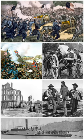In the South, many men deserted temporarily to take care of their distressed families, then returned to their units. In the North, bounty jumpers enlisted to get the generous bonus, deserted, then went back to a second recruiting station under a different name to sign up again for a second bonus; 141 were caught and executed. From a tiny frontier force in 1860, the Union and Confederate armies had grown into the largest and most efficient armies in the world within a few years. European observers at the time dismissed them as amateur and unprofessional, but British historian John Keegan's assessment is that each outmatched the French, Prussian, and Russian armies of the time, and but for the Atlantic, would have threatened any of them with defeat.